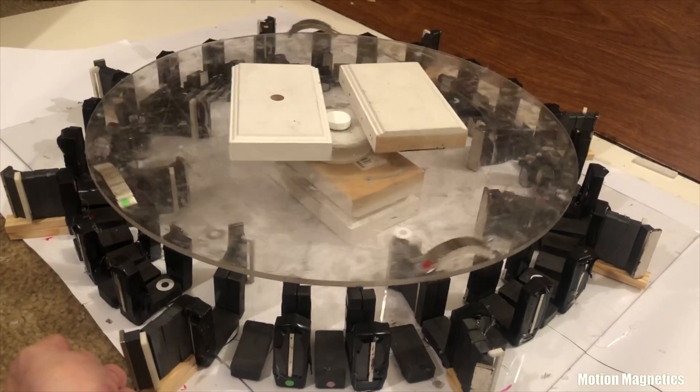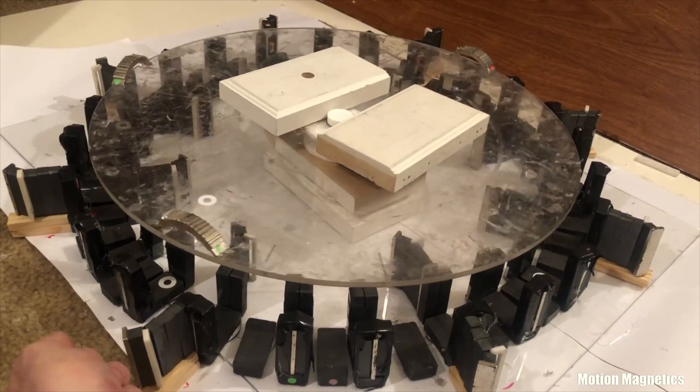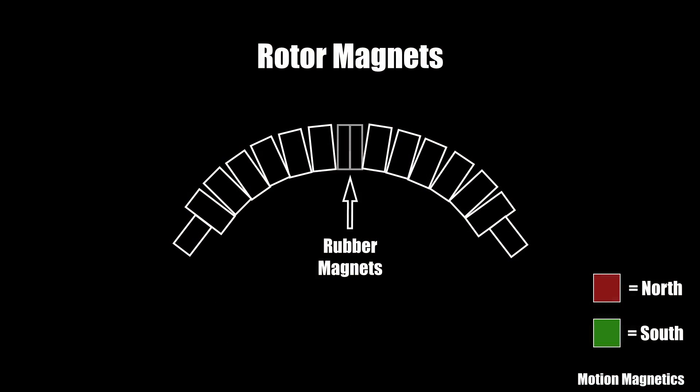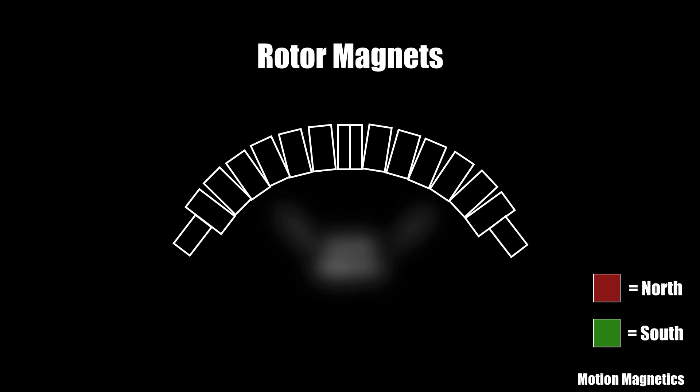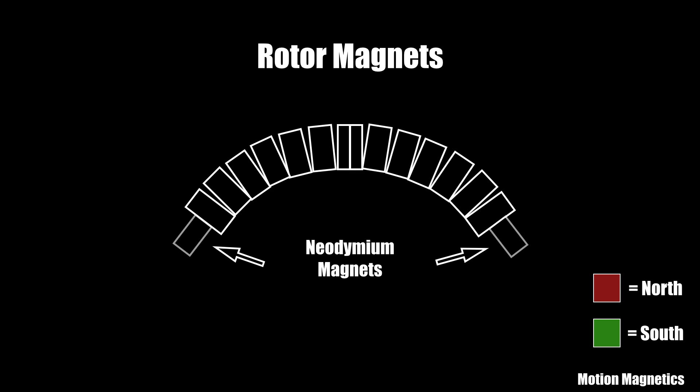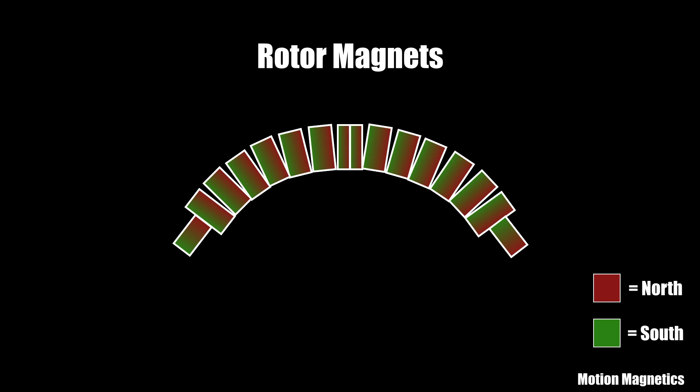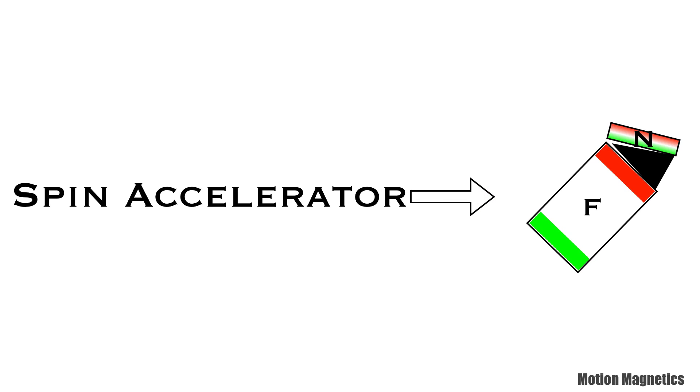It might surprise you, but this design utilizes portions of all three of Howard Johnson's magnetic motor patent designs. All three of his designs included these banana shaped magnets. They were originally composed of ferrite, rubber, and neodymium magnets.